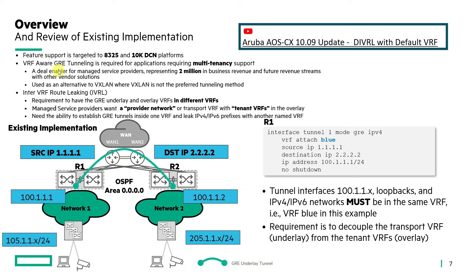Another area of the code that needed to change is inter-VRF route leaking support. The requirement is to have the GRE underlay and overlay VRFs in different VRFs. In the existing implementation, you can see the tunnel attached to VRF blue with source IP 1.1.1.1 and destination IP 2.2.2.2. All tunnel interfaces — 100.1.1.1 and 100.1.1.2 — needed to be in the same VRF, such as VRF blue or the default VRF.